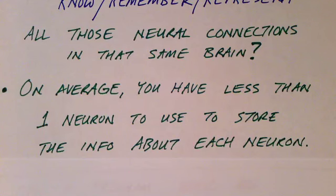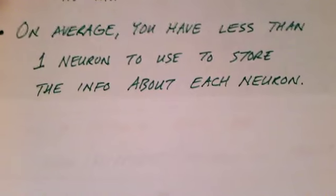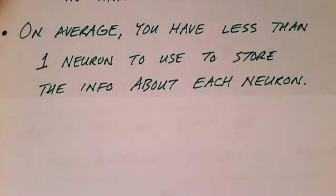So the problem is, to capture the information about your brain, about each neuron, you're going to have to use more than one neuron. And so it seems that we can't know our own brain, at least in detail.